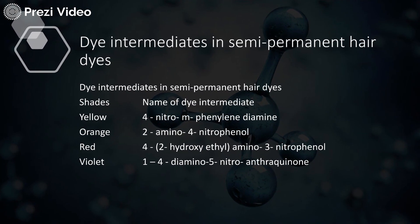These are examples of the dye intermediates used for semi-permanent hair dyes. You can see a wide range of shades like yellow, orange, red, and violet. Most of these dyes are from nitropyrone derivatives and anthraquinone derivatives.